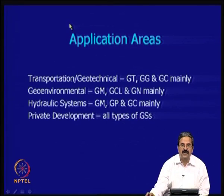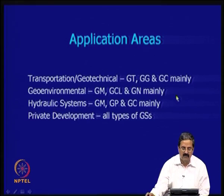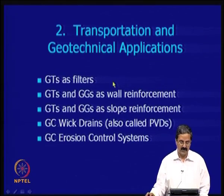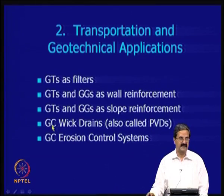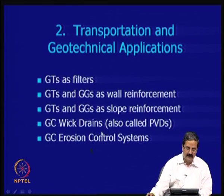Application areas include transportation — particularly pavements — and geotechnical. Geotextiles are very effective as filters, and as wall and slope reinforcement with geogrids. Prefabricated vertical drains (PVDs), also called wick drains, are effective in consolidation applications. Geocomposites are used for erosion control — where slope erosion is taking place, you can have geocomposite erosion control applications as well.